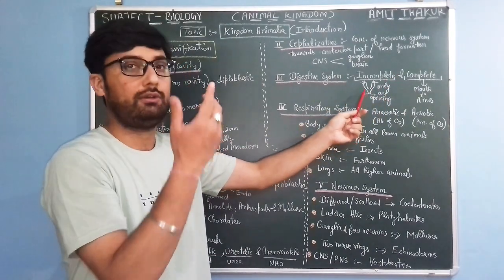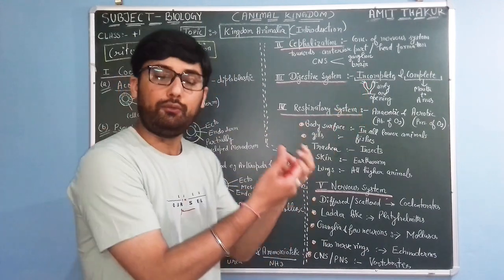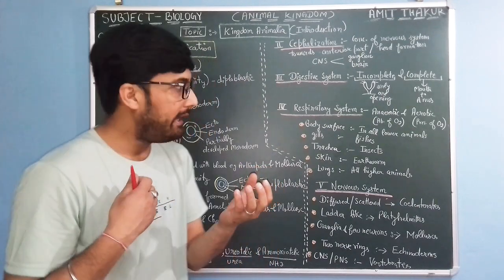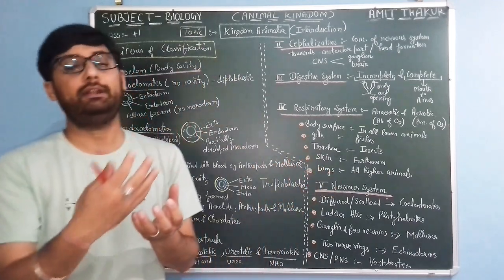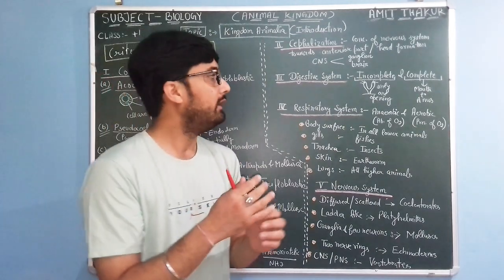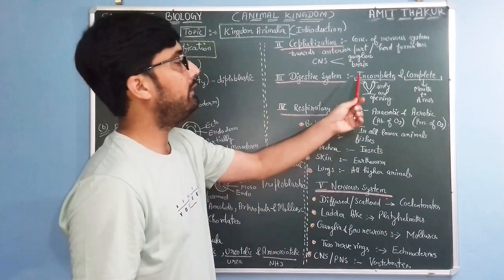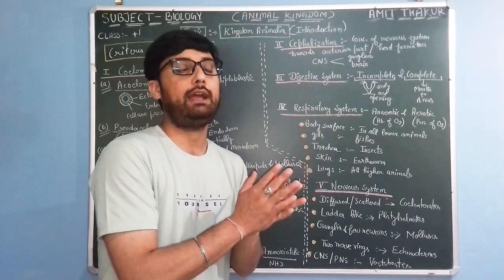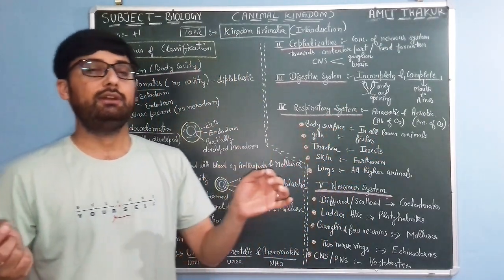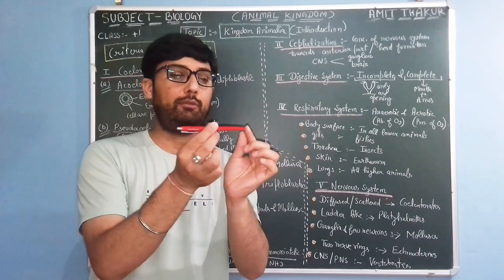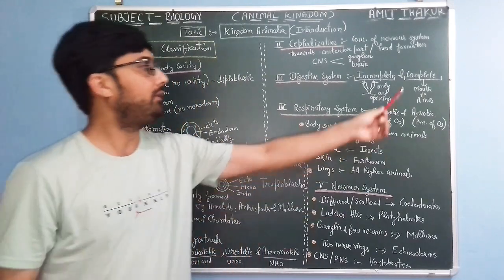Incomplete digestive system — like in case of sponges, there is only one opening. That single opening serves for both entry of food particles and expelling out fecal matter or waste. So they have an incomplete digestive tract. But in case of a complete digestive system, there is a mouth and there is an anus — like a pipe — so entry of food and expelling out fecal matter through two separate openings.